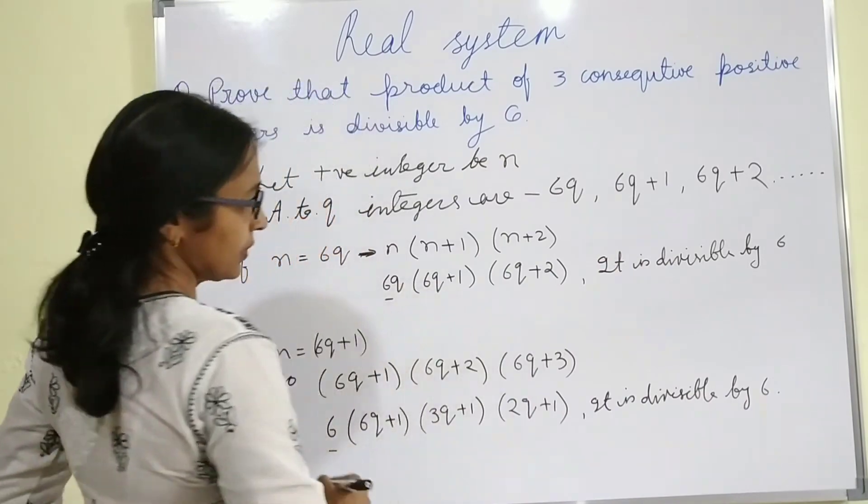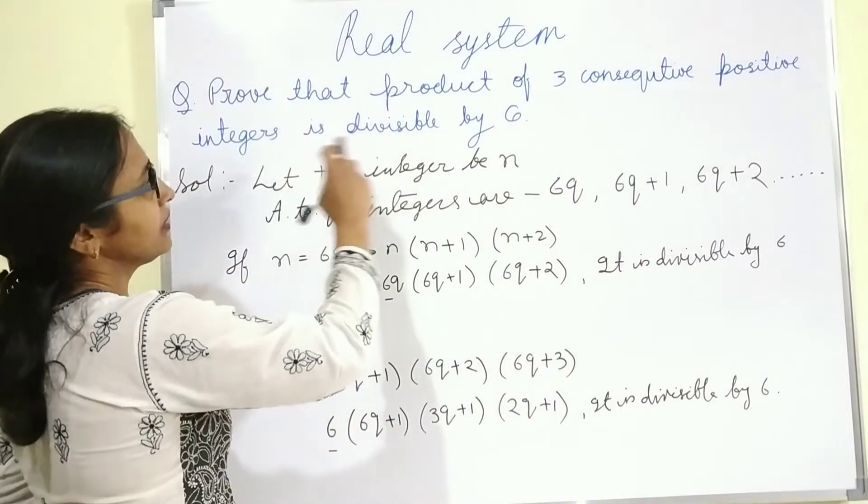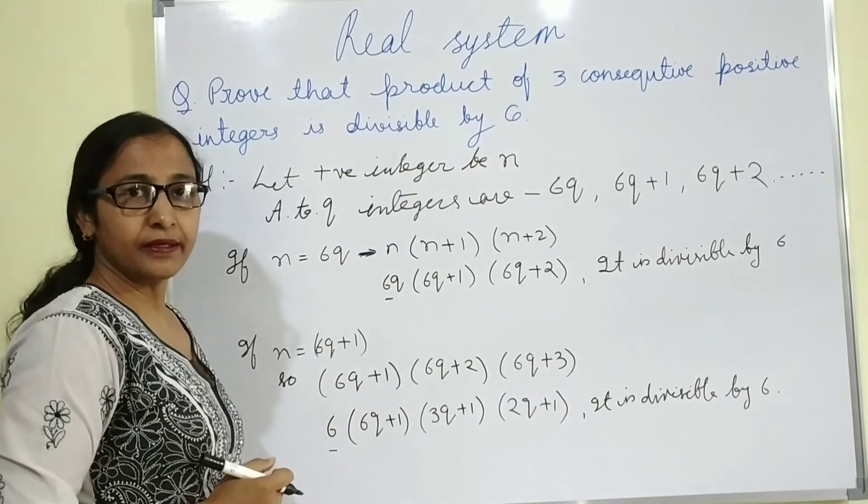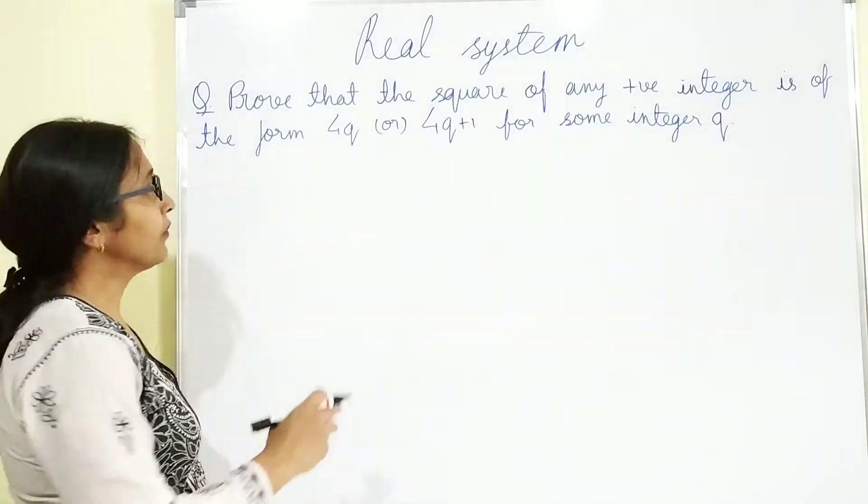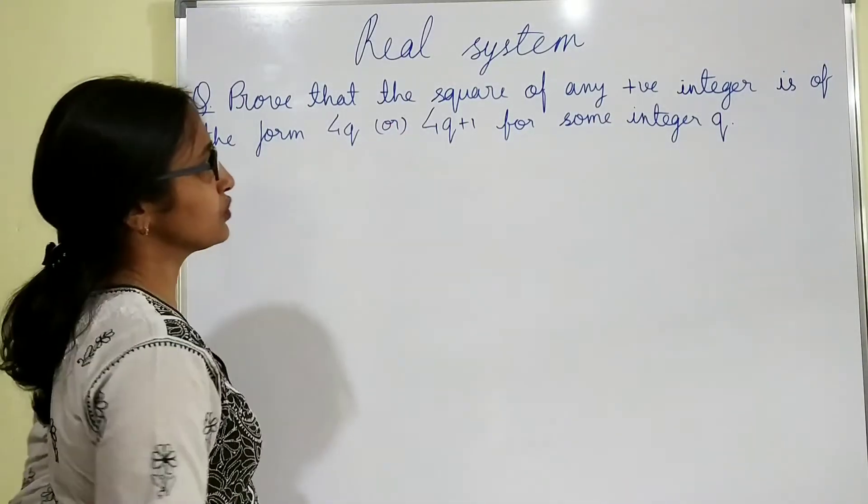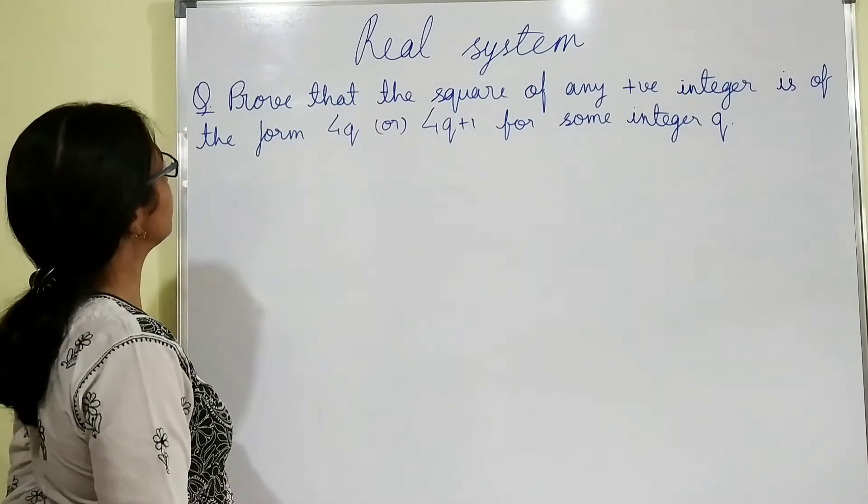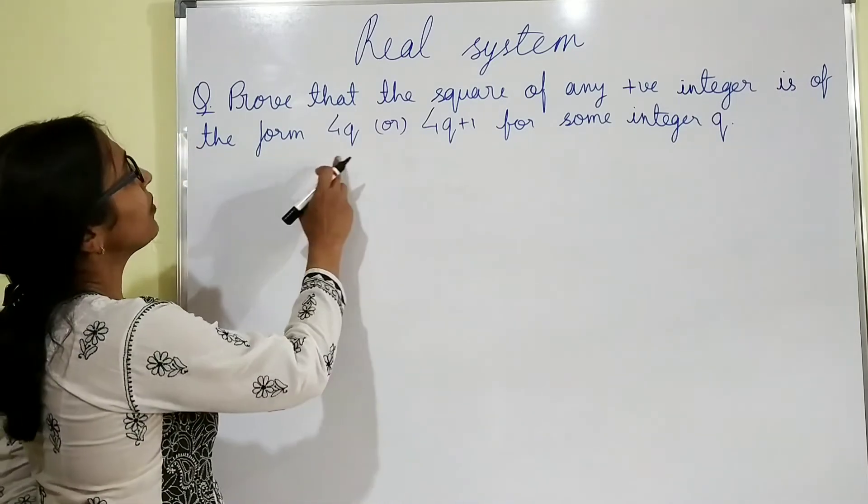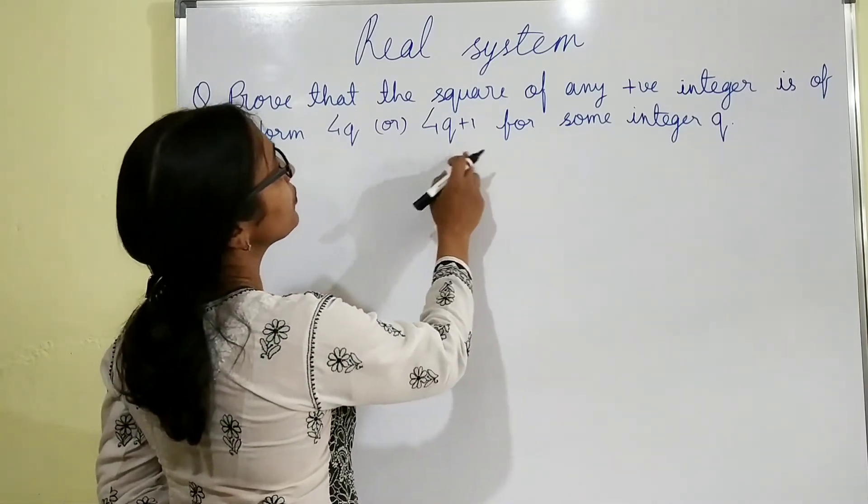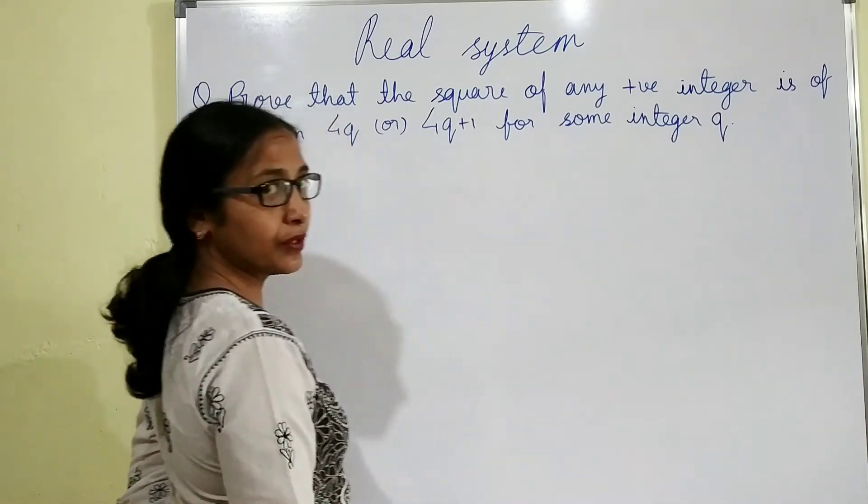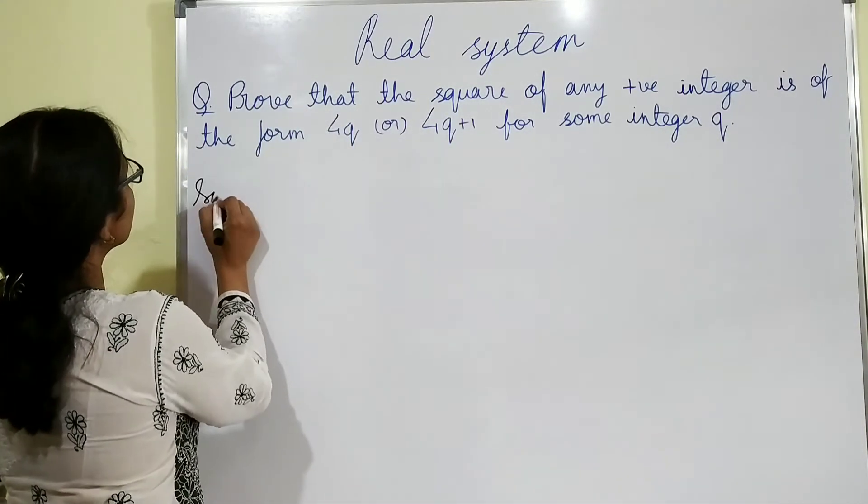Thus, 3 consecutive positive integers are divisible by 6. Now next example is prove that the square of any positive integer is of the form of 4q or 4q plus 1 for some integer q.